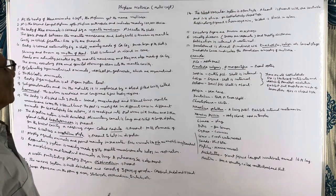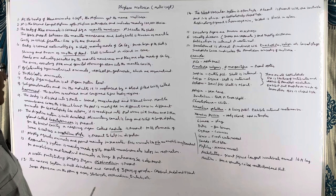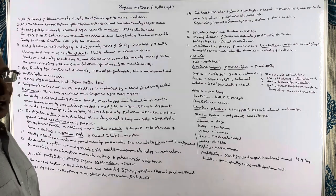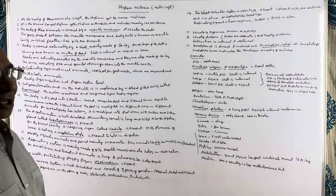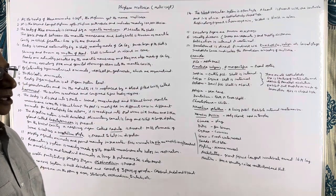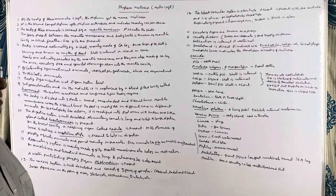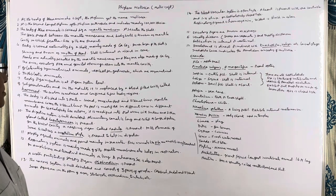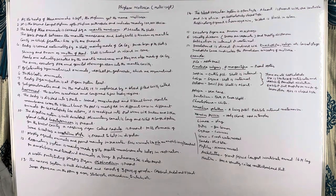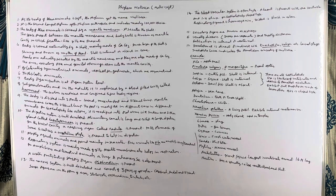Today I am taking up the phylum Mollusca. Mollusca means soft because the body of these animals is very soft, and that is how the phylum got its name. Phylum Mollusca is the second largest phylum after phylum Arthropoda, and it includes about one lakh species.